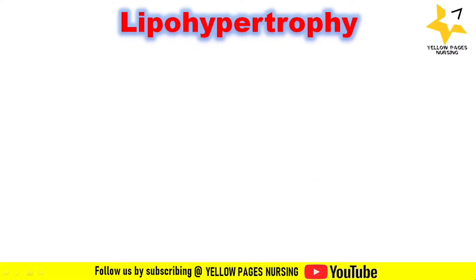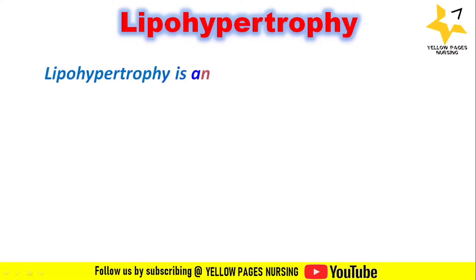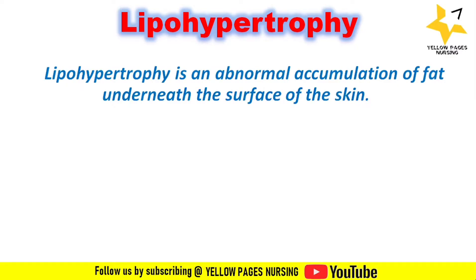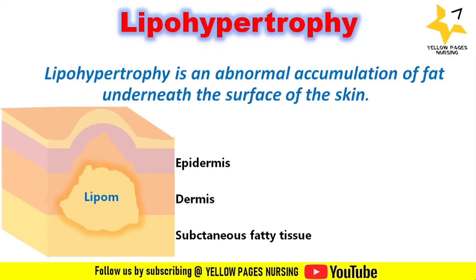What do we mean by lipohypertrophy? Lipohypertrophy is an abnormal accumulation of fat underneath the surface of the skin. Here you can see a picture of the surface of the skin. Lipohypertrophy is formed due to continuous administration of insulin shots on the same site.